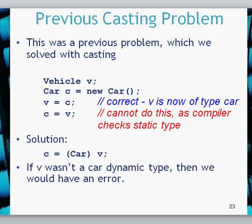Regarding the instanceof operator, consider a previous casting problem that we had. We said we're going to create a static type vehicle called V, then create a static type car called C with a dynamic type of car. We can ask: can the type vehicle V equal the type car C? Yes, through inheritance. But can car C equal static type V, which is vehicle? We can't do that because the compiler compares static types. The solution we found previously was to use a car cast — we cast using the car object and tell the compiler: trust us, V is of type car, the dynamic type is car, so that's fine.